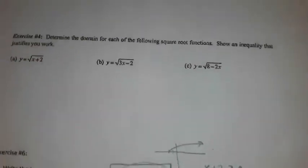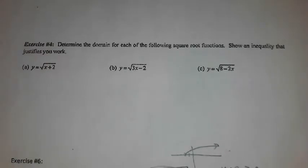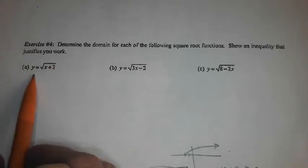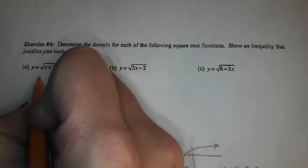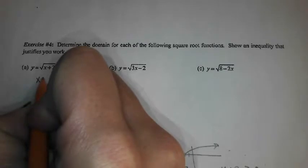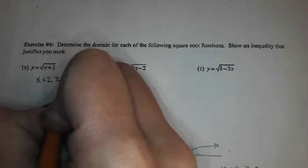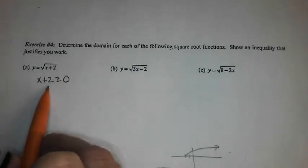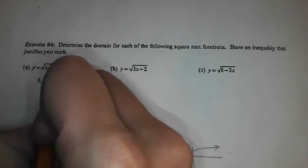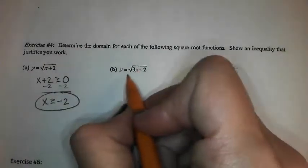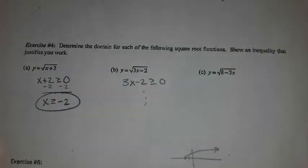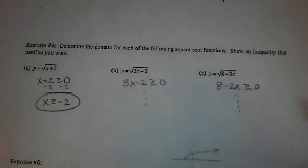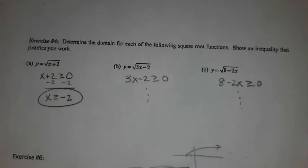Exercise 4: determine the domain. Show an inequality that justifies your work. For part A, what's under the radical has to be greater than or equal to zero — then solve it, and that gives your domain. Same for part B: 3x minus 2 has to be greater than or equal to zero — solve it. And part C: 8 minus 2x has to be greater than or equal to zero — solve it, and that gives your domain. Do we know why it has to be greater than or equal to zero? Because otherwise we'd get an imaginary number.